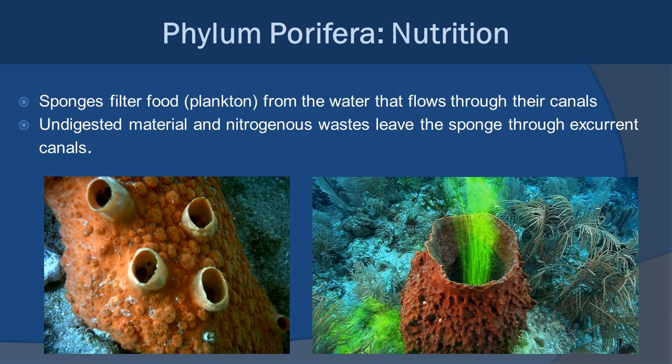Plankton in the water flows through the sponge, and the sponge traps and ingests that plankton as food. Similarly, animals need to get rid of waste — nitrogenous waste can be carried away through the excurrent stream as well. Reproduction also ties into this water flow system.